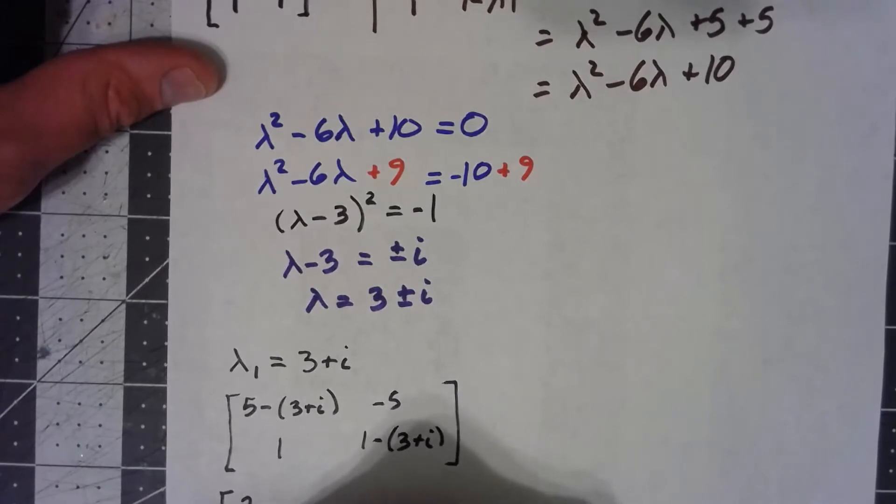That gives me a 2 minus i, a negative 5, a 1, and a negative 2 minus i.